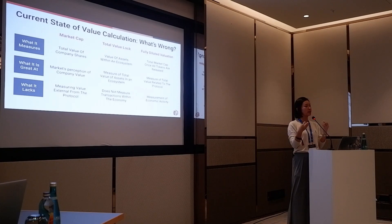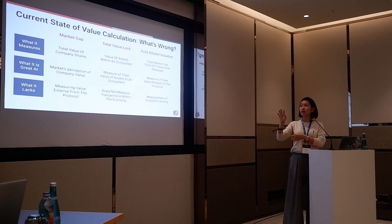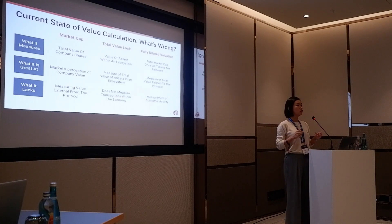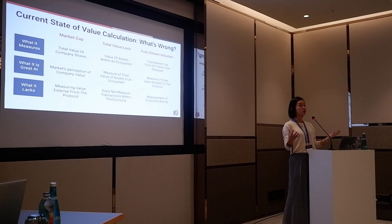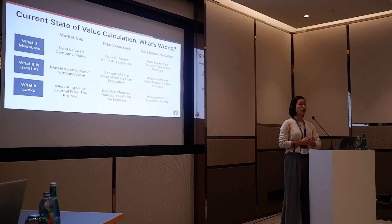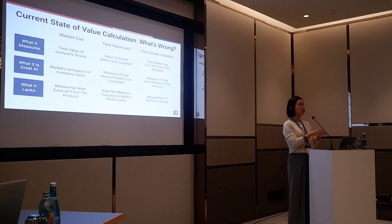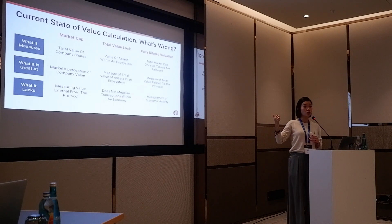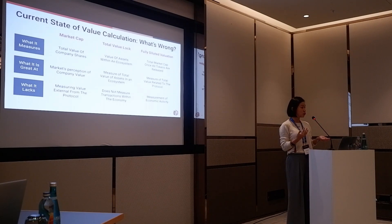The second metric is Total Value Locked, which measures the total value of assets within the ecosystem. This is good for measuring assets accrued to an ecosystem. However, it does not measure transactions within the ecosystem. It's useful for DeFi protocols — DEXes and lending — where you need to understand liquidity and debt to do efficient trades, reduce slippage, and get better interest rates. But TVL is not relevant for a game, an enterprise, or loyalty points. It's unique to a specific segment of DeFi protocols and doesn't measure the value of transactions within the system.